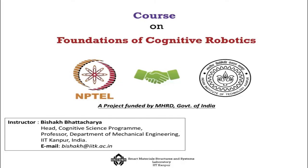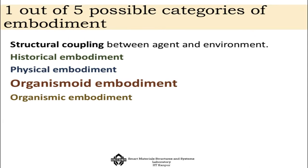I will also tell you how we can develop cognitive robots using a special class of materials called smart materials, and thus we will be able to build organismic robots. So in this second lecture on Foundations of Cognitive Robotics, we will focus on organismoid embodiment. All other couplings — structural, historical, and the very futuristic organismic embodiment — are not our focus at this moment.